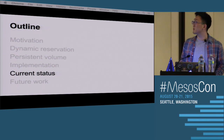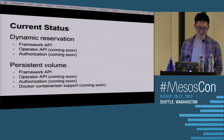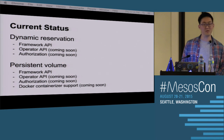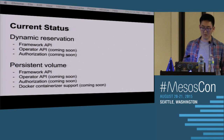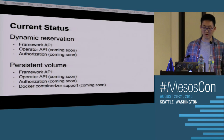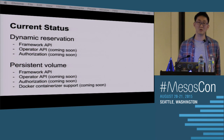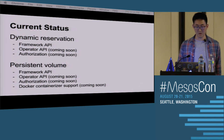The current status: the operator API and authorization are currently going through code review, and we hope to get that committed soon. The framework API for both dynamic reservation and persistent volumes are available today. We decided to prioritize that first because we wanted to support storage service frameworks such as MySQL, HDFS, and Cassandra and let them take advantage of it. The operator API is coming soon.